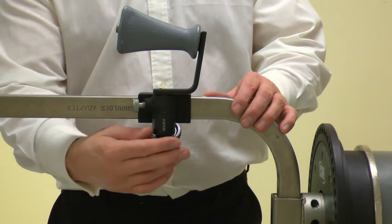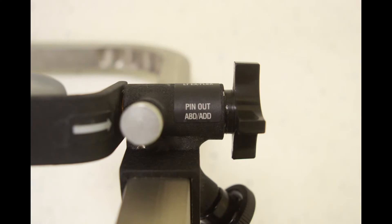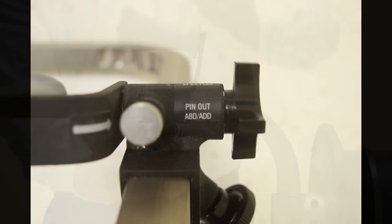Adjust the handle rotation by releasing the screw, then pulling the pin. Rotate the handle to position AB/adduction. Then secure with the screw.